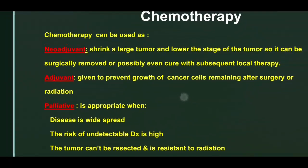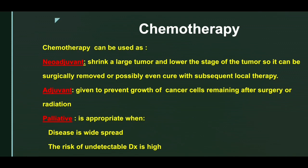Adjuvant treatment means the disease is localized to an organ, the malignancy is removed surgically, and then followed by adjuvant treatment. The goal is to prevent growth of cancer cells remaining after surgery or radiation. The surgeon removes the mass with safety margins, but microscopic cells that cannot be seen may be present away from the mass and could grow later; adjuvant chemotherapy kills these cells.